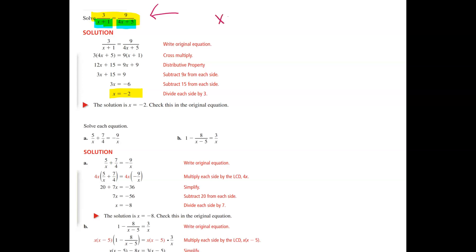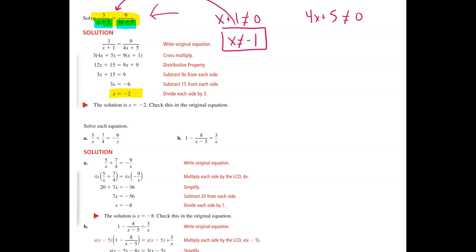What you want to do is figure out what x values would make your denominator zero. The easiest way is to take your denominator — like x plus one or four x plus five — and set it to not equal zero. In the first problem, I subtract one, so I want to make sure that negative one is not an answer, because putting it back gives a division by zero error. In the second, I subtract five and divide by four, so my solution also must not be negative five-fourths.